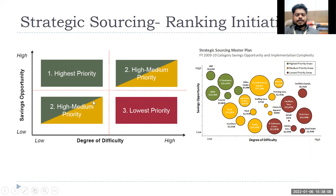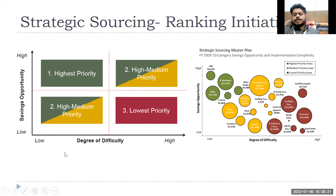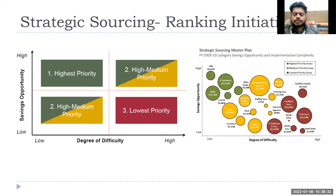In the second step, you prioritize — starting with low-hanging fruit of highest priority. The rule: whenever you start working, complete simpler tasks first. In strategic sourcing, where savings opportunities are high and degree of difficulty is low, that should be your highest priority. Lowest priority is where degree of difficulty is high and savings opportunities are also low.